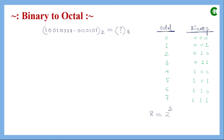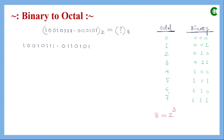Since each octal digit requires three bits in binary, we represent digits zero through seven using three-bit patterns from 000 to 111. To convert a binary number to octal, we group the digits of the binary number into groups of three bits. For the integer part, we start grouping from the LSB (least significant bit) and move towards the MSB.